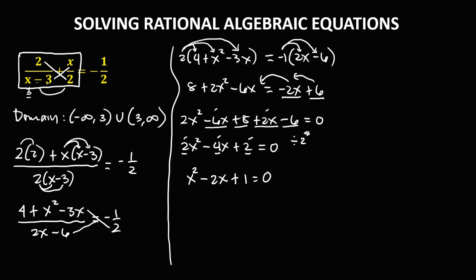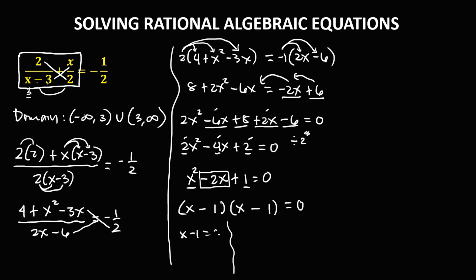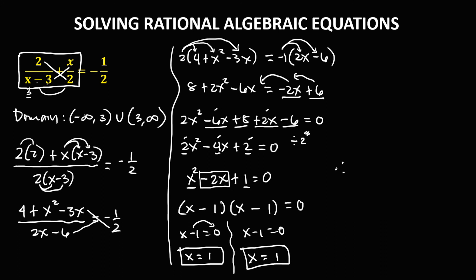From the quadratic equation x squared minus 2x plus 1 equals 0, we can solve by factoring. The factors of x squared are x times x, and the factors of 1 are 1 times 1. Since the middle term is negative, both signs are negative: (x minus 1)(x minus 1) equals 0. Therefore x equals positive 1 is the solution of this rational algebraic equation.